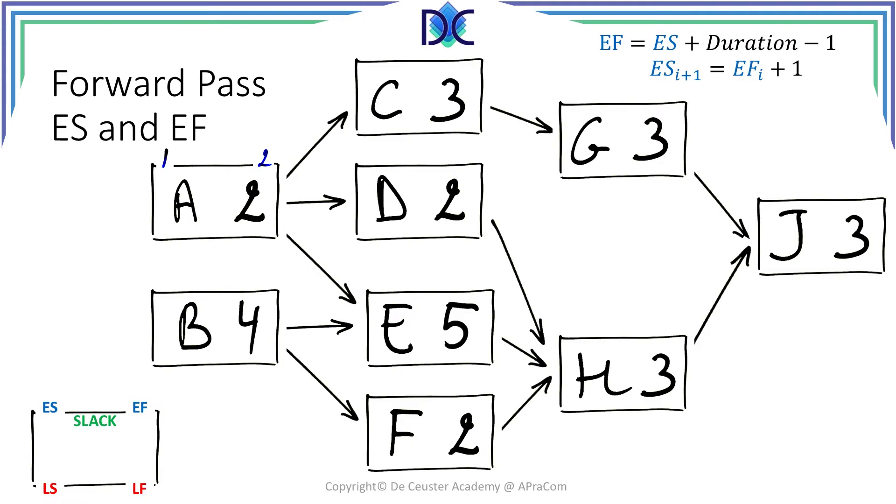The next thing is to look at the successor. C is a successor of activity A and C can only start when A is finished. Since A finishes at the end of the working day of April the second, C can only start in the morning of April the third. Again, counting three days means that activity C will finish in the evening of April the fifth.